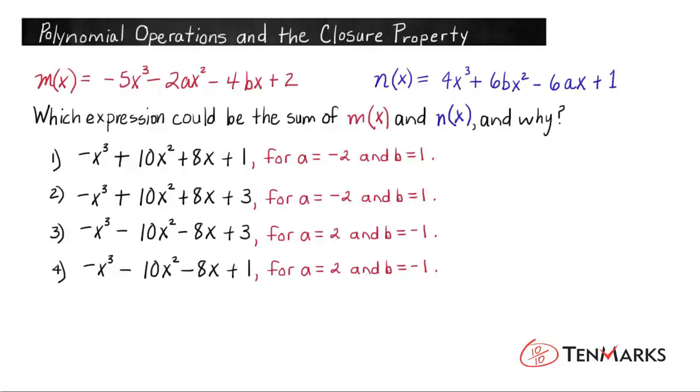Now let's take a look at this question. We're given that m(x) equals -5x³ - 2ax² - 4bx + 2, and n(x) equals 4x³ + 6bx² - 6ax + 1. The question is, which expression could be the sum of m(x) and n(x), and why?